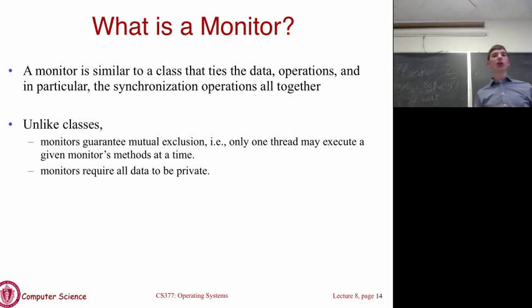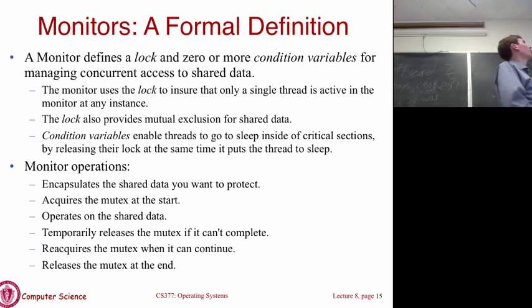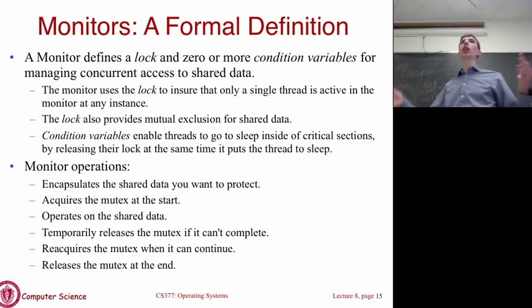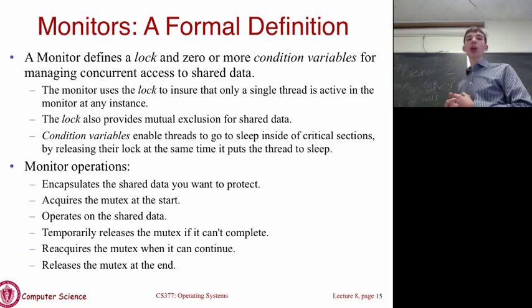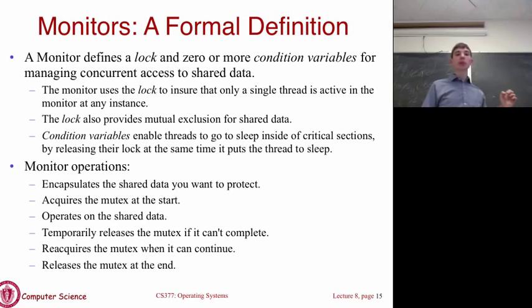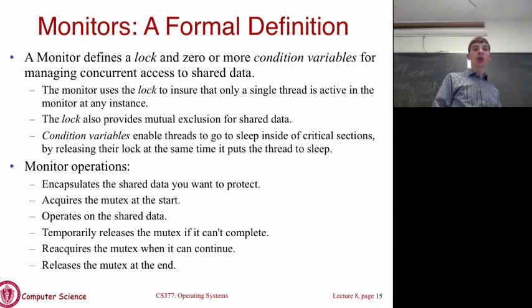More formally, a monitor has one single lock — associated with the monitor — and zero or more condition variables that provide additional capabilities. The lock ensures only one thread is executing a method in the monitor at once. Condition variables let us put threads to sleep inside critical sections, which I'll explain shortly.